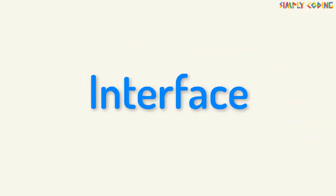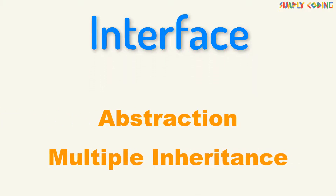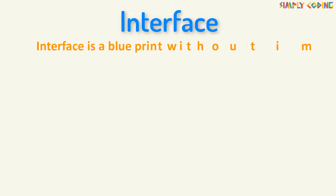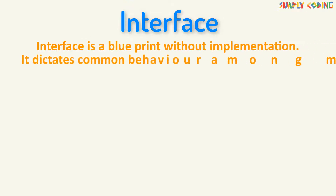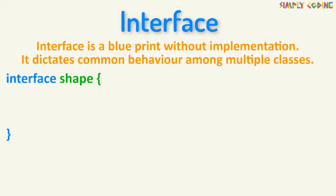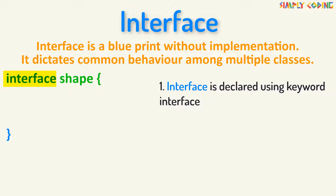Now we will take a look at interfaces. It's one of the ways to achieve abstraction or multiple inheritance. However, an interface is not exactly the same as an abstract class or multiple inheritance. An interface is a blueprint without any implementation — it just dictates the common behavior amongst multiple classes. So let's say you want to declare Shape as an interface; you use the keyword interface and not class to define it.